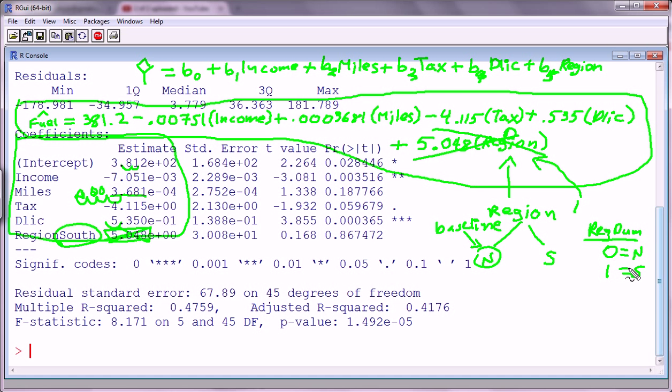So if a state is in the south, it adds 5.48 to the fuel prediction per person. If the state was in the north, it adds nothing. So that's another way of saying that southern states have a higher fuel consumption per person than northern states. That is just off this made-up data. Don't read too much more into that. I just wanted to explain how R handles categorical features. In this case, it was a binary.